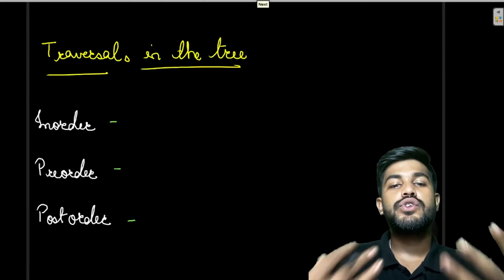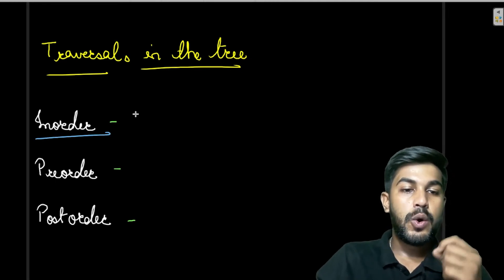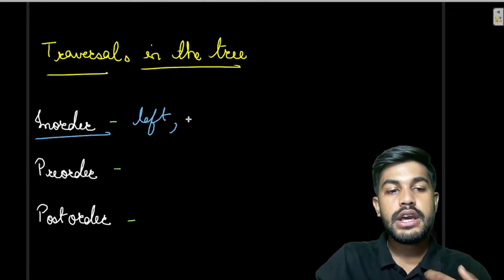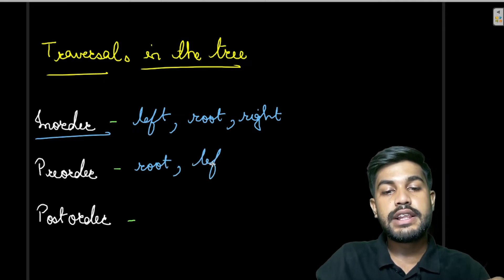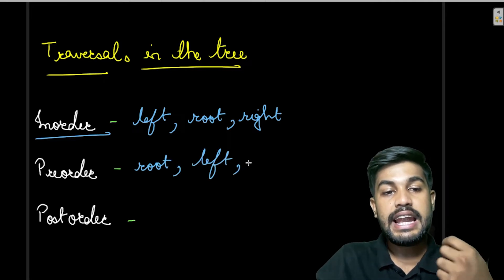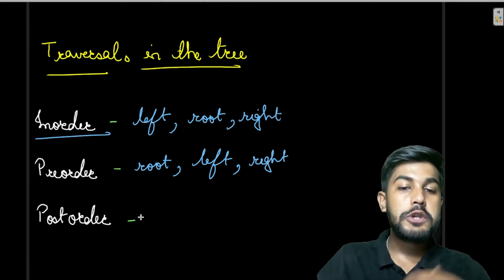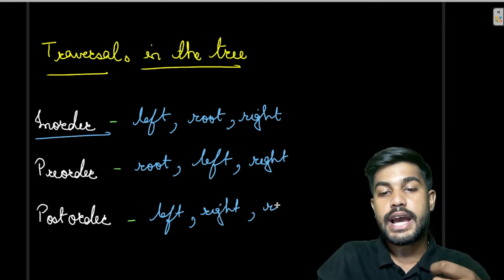To traverse the tree we have three traversals. The first is in-order traversal, where we travel the left part first, then the root, then the right. In pre-order, we travel the root first, then the left, then the right. In post-order, we travel the left part first, then the right part, then the root at the end.